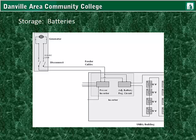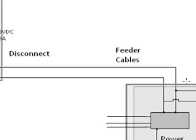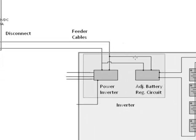Storage. Batteries are often used in grid-tied and standalone systems during higher demand, when the generator is either not producing enough or winds are not sustained. Here we see the DC generator, a disconnect circuit, the feeder cables going to a utility building where it houses the inverter that has a regulator circuit for the batteries.